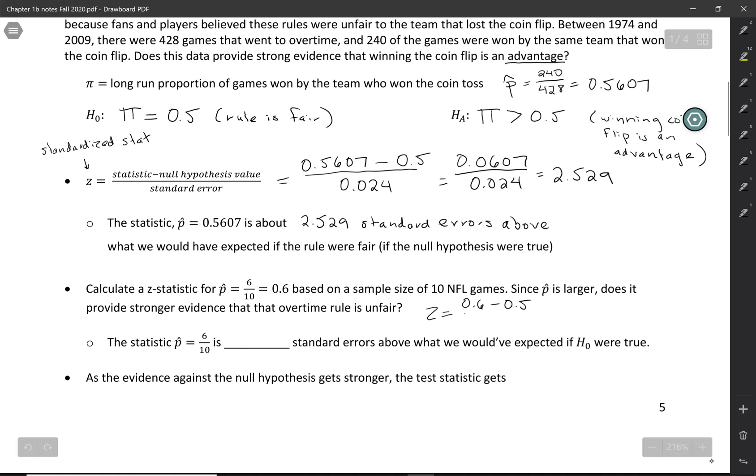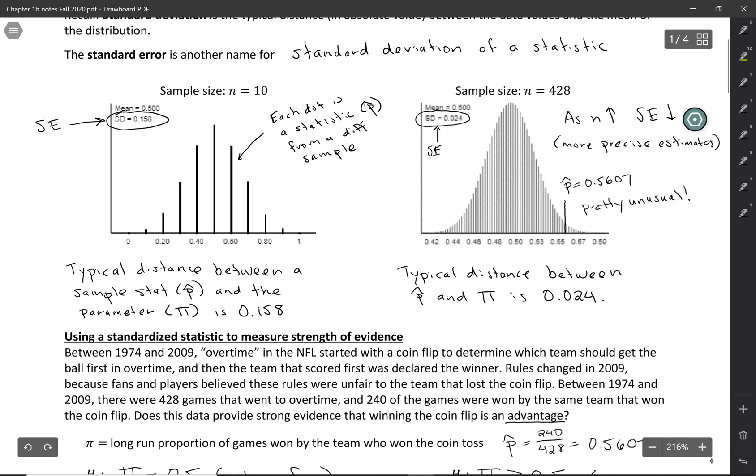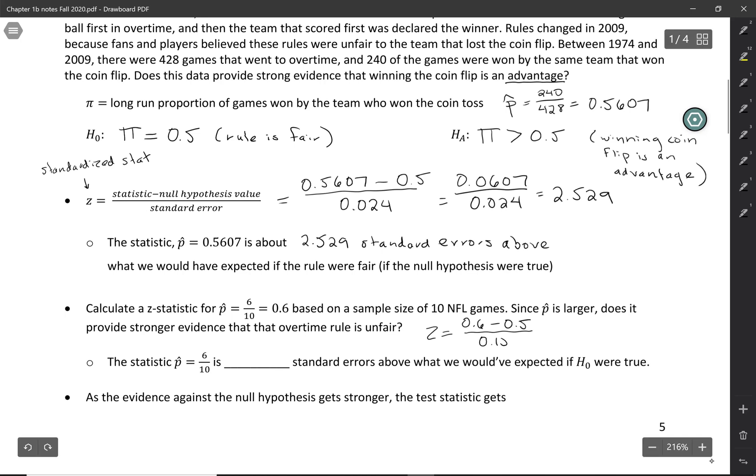When we find the numerator, the difference between 0.6 and 0.5 is actually bigger than it was before, but the standard error is going to be bigger too. When the sample size was 10, the standard error in that case was 0.158. I'm going to fill in 0.158.